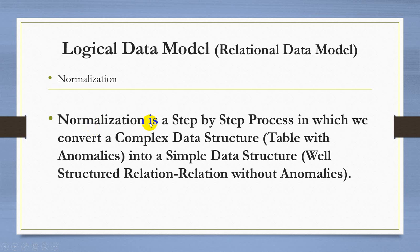The definition of normalization: it is a step-by-step process in which we convert a complex data structure — that is, a table with anomalies where there is difficulty inserting, modifying, and deleting data — into a simple data structure, which is a well-structured relation that has no anomalies in it. We convert the table into another form, another table, that does not have anomalies.